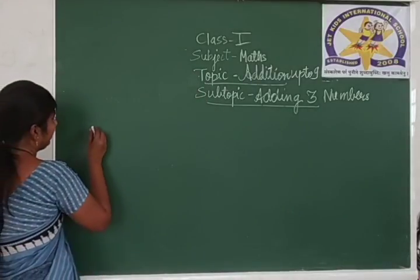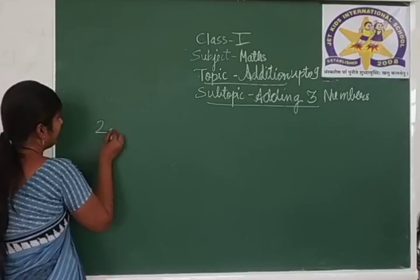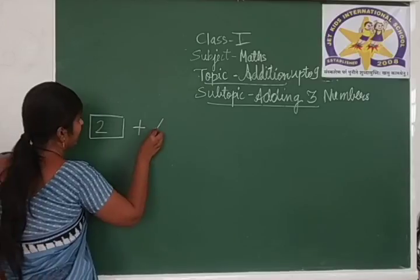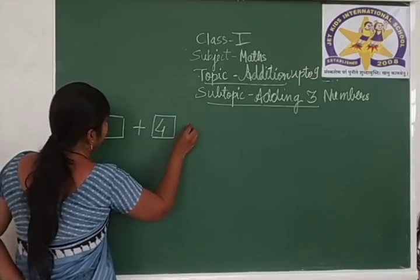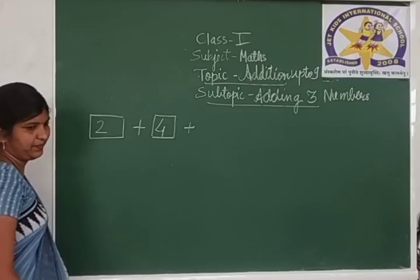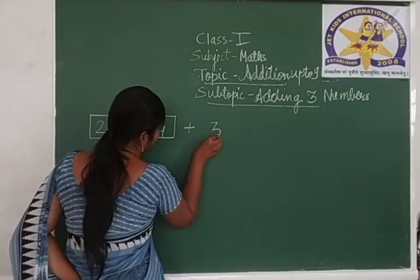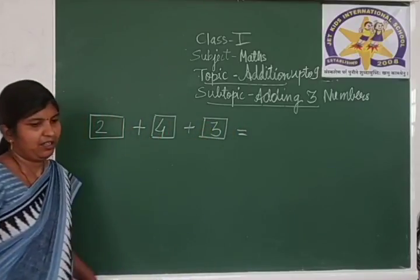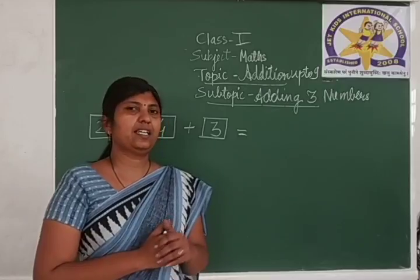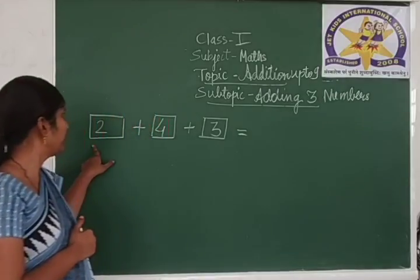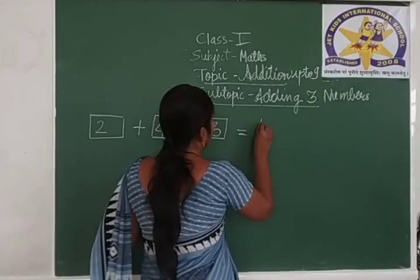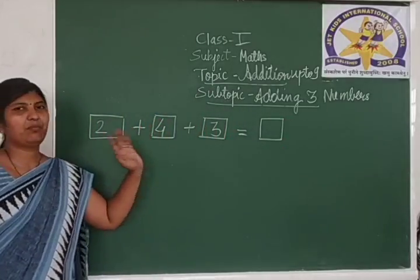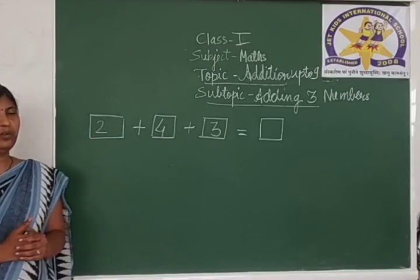So, see here is the addition given: 2 plus 4 plus 3. This addition is given here. Now we are going to see how to add these 3 numbers. 2 plus 4 plus 3 — what will be the answer? When we add 3 numbers, what we have to do? Add the first 2 numbers.